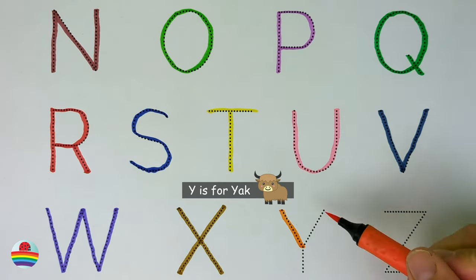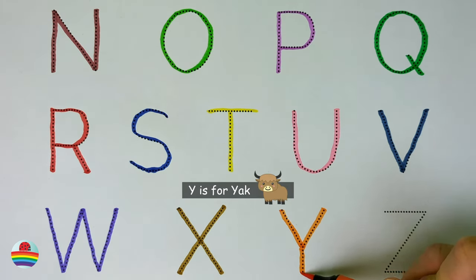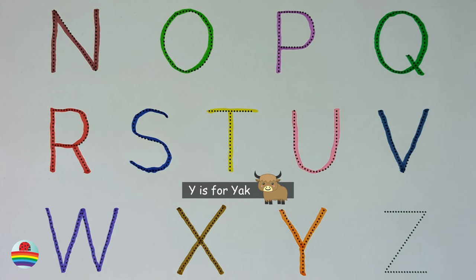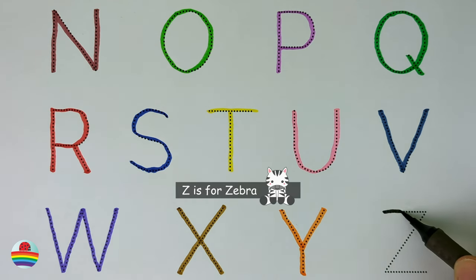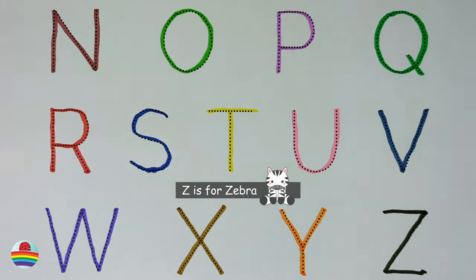Y. Y. Y is for yak. Y. Z. Z is for zebra.